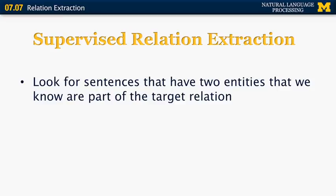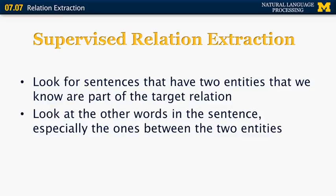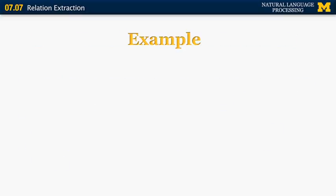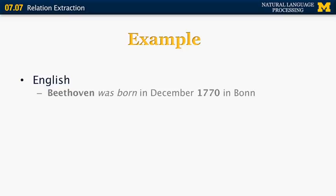What about supervised relation extraction? In this case, we want to look for sentences that have two entities that we know are part of the target relation and then look at the other words in the sentence, especially the ones between the two entities and build a classifier that looks for those clue words between the target words and help us classify the entire tuple. Here's an example. In English, we have a sentence like, Beethoven was born in December 1770, Bonn. Was born is the expression that links together the two entities, Beethoven and 1770.